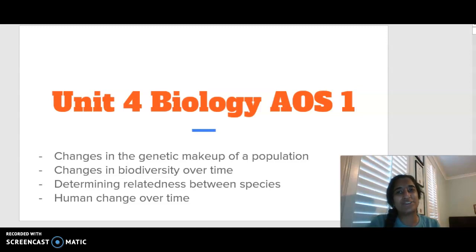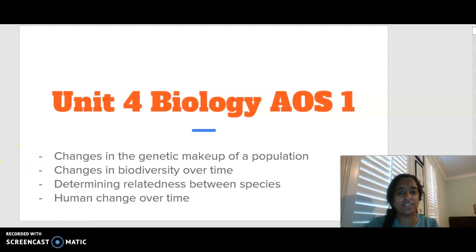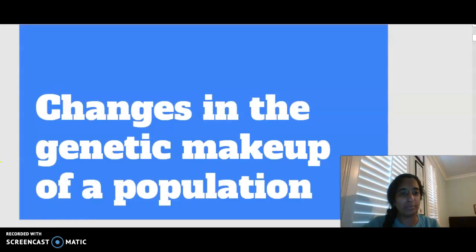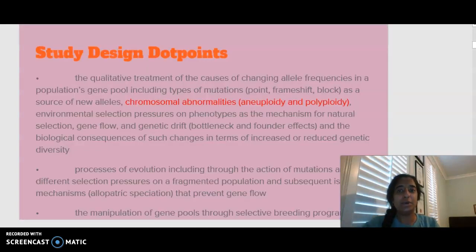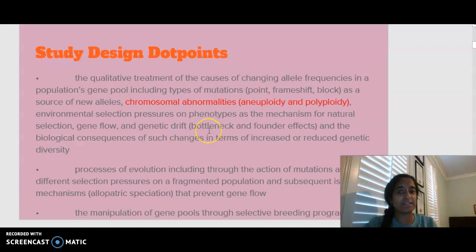Hello everybody, welcome to Unit 4 Biology Area Study 1. Today our focus is going to be on changes in the genetic makeup of a population. In this component of the study design, we're going to be looking at mutations, genetic drift — the bottleneck effect and the founder effect — natural selection, and speciation and artificial selection as well.